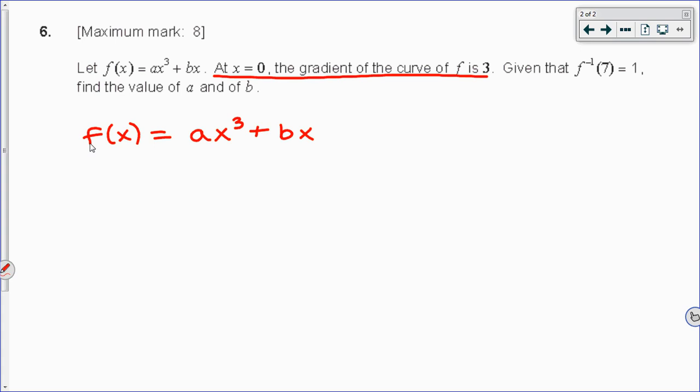So what we're told is that at x equals 0, the derivative is 3. It is not going to work to plug in 0 for x and set the function equal to 3. It is going to work to find the derivative, so f prime of x. It's a gentle power rule derivative: bring down the 3, there's already an a there. Reduce the power by 1, and the derivative of bx is just b. There's our derivative, and now I know that at x equals 0, this is equal to 3.